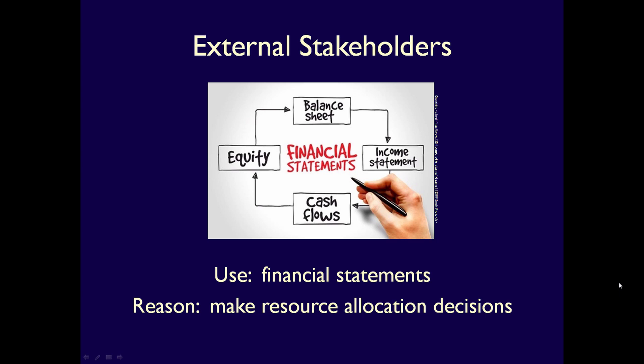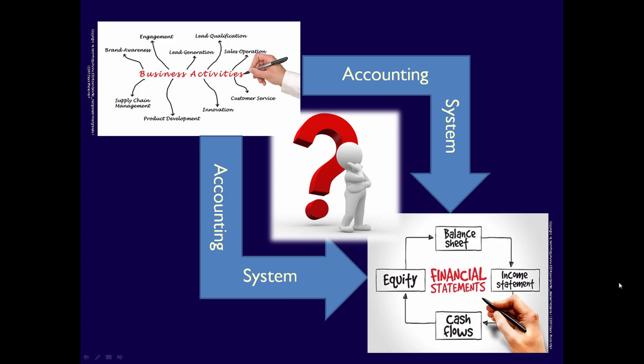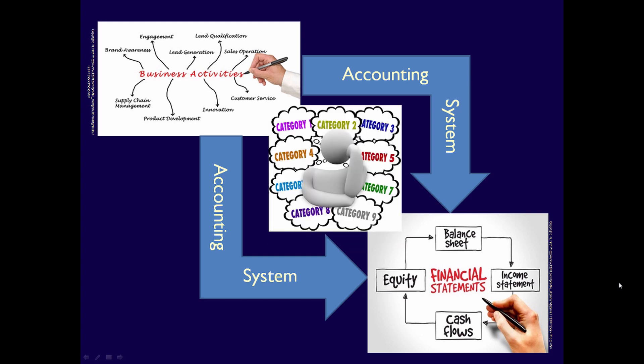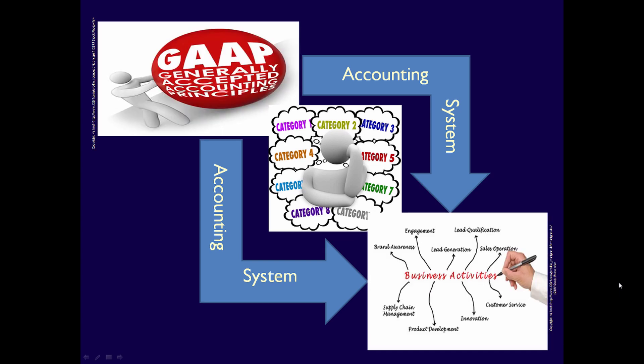External stakeholders use the financial statements to analyze a business and make resource allocation decisions — decisions about whether or not to provide resources, often money, to the business. So how does the accounting system move from business activities to financial statements? The accounting system collects and groups the activities so it can eventually produce the financial statements. Generally accepted accounting principles specify the categories, called financial reporting elements, that all business activities are divided into. By grouping the activities into elements, we can eventually provide financial statements to external stakeholders that are useful for decision making.